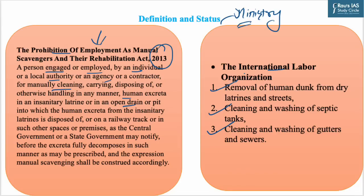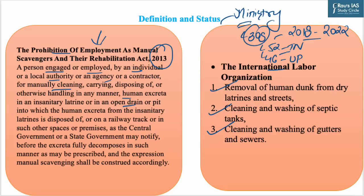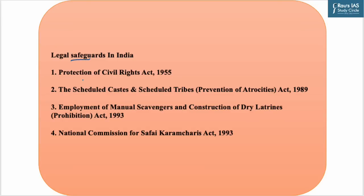As per the reply of the Minister of State for Social Justice and Empowerment in Rajya Sabha, at least 308 individuals have died while cleaning sewers and septic tanks in the past five years (2018 to 2022), of which 52 are from Tamil Nadu, 46 from Uttar Pradesh, 40 from Haryana, 38 from Maharashtra, and 33 from Delhi. The actual figures could be higher since FIRs are not registered in many cases.